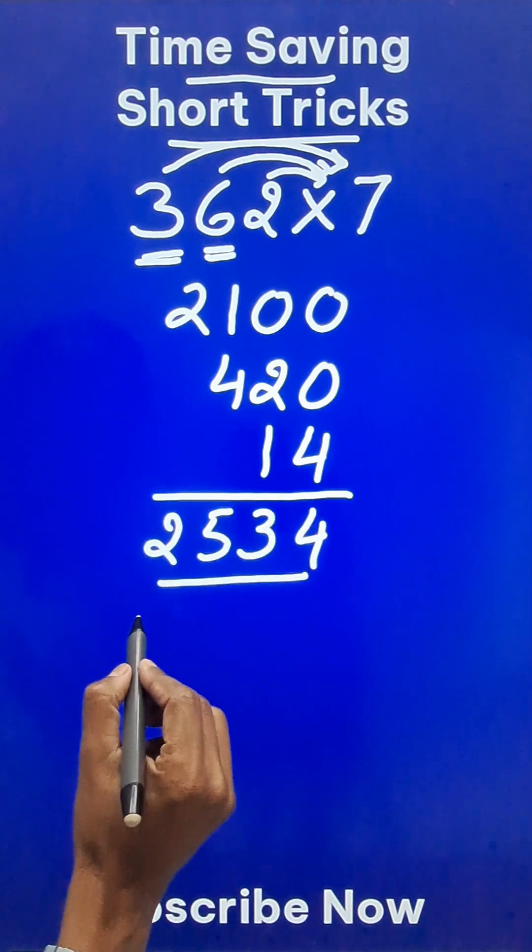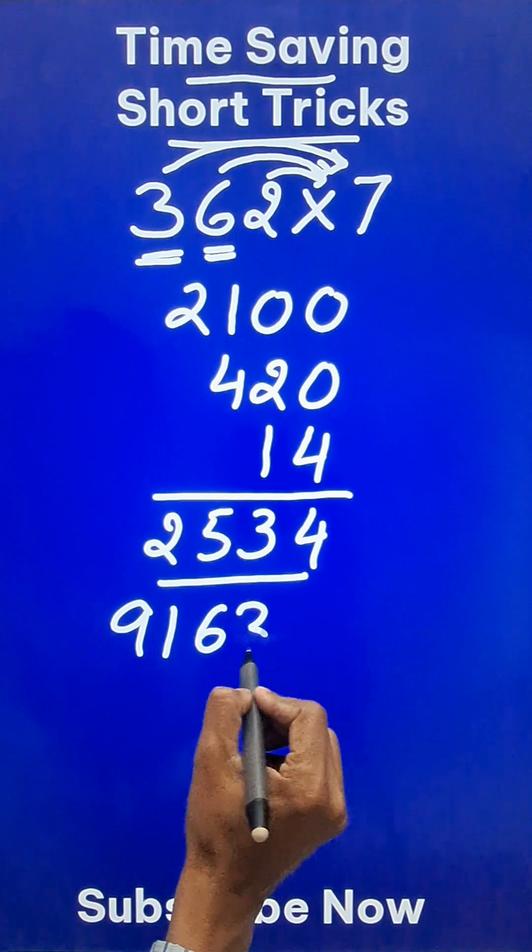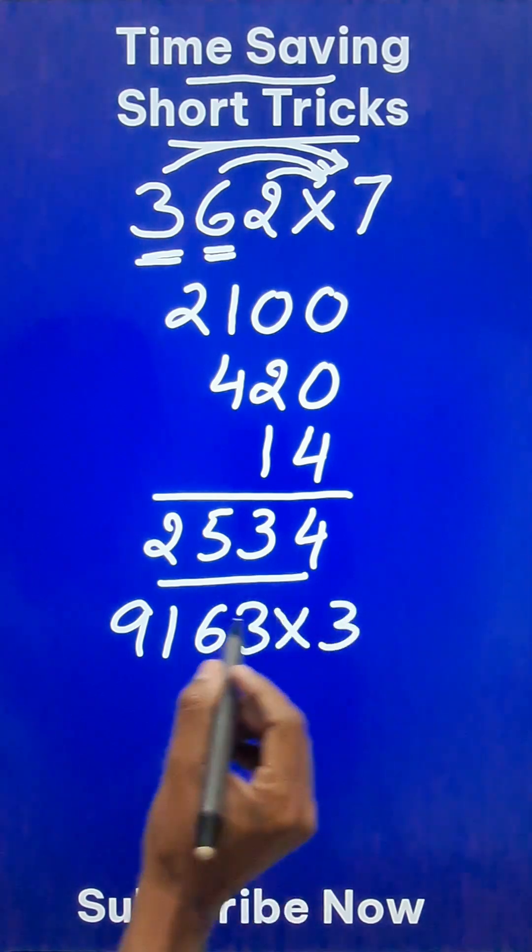Likewise, if it is a 4-digit number like 9, 1, 6, 3 and you need to multiply that by 3, I do it like this.